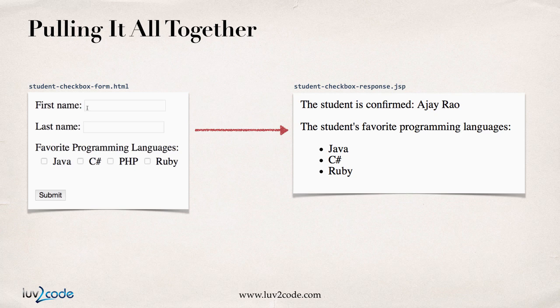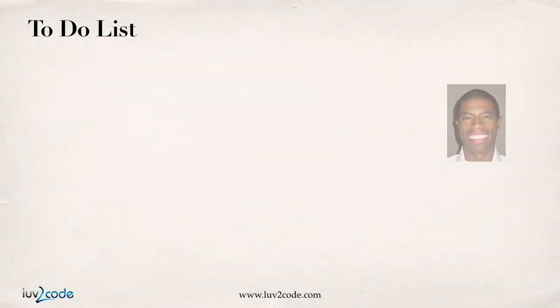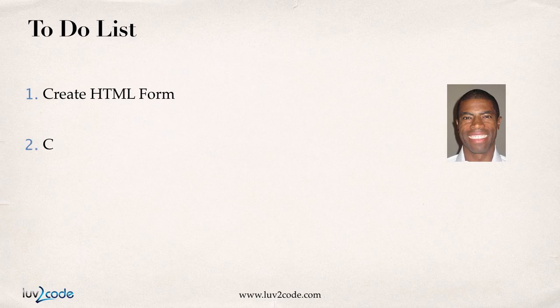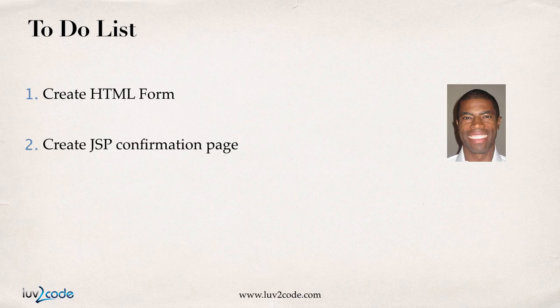Let's pull it all together. For this project we're going to have a student checkbox form — they can enter their information, choose multiple programming languages, and hit submit. That'll go over to a JSP, which will give them their confirmation information, loop through all languages selected, and display them as an HTML list. The to-do list: first, create the HTML form; second, create the JSP confirmation page. I'll break this up and show the Eclipse coding in the next video.